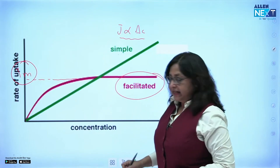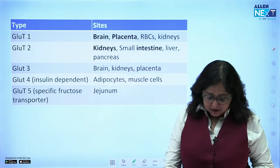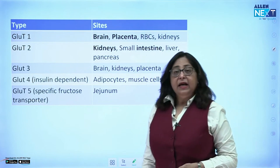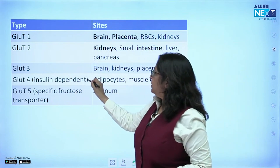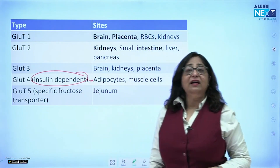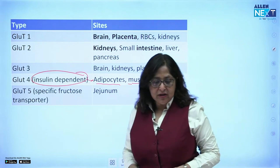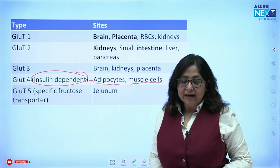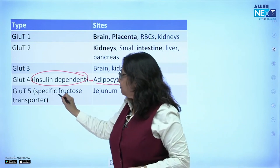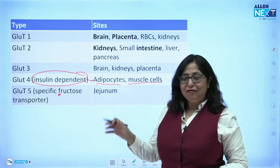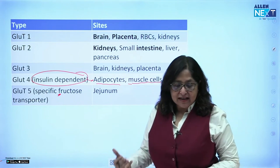Here is a very important chart showing the types of GLUT transporters and where they are found. GLUT-4 is the only insulin-dependent one; all others are insulin-independent. GLUT-4 is found on adipocytes and muscle cells. GLUT-5 is a specific fructose transporter — remember: F of 5 for fructose — found in the jejunum of the small intestine where fructose absorption occurs.